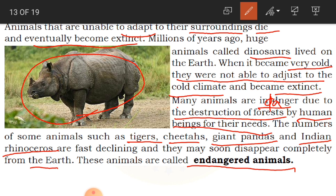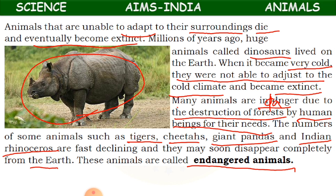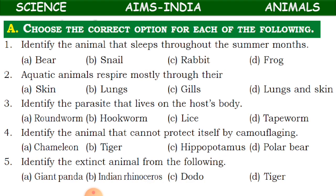This was about extinct and endangered animals. Until now we have learnt about adaptations for food, protection, surroundings and also extinct and endangered animals. Let us now practice some exercises from what we have learnt.